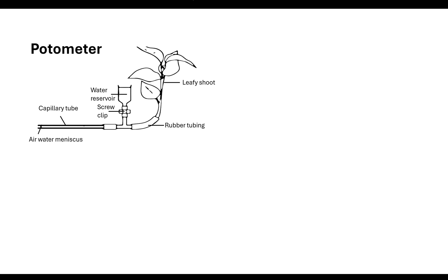To measure the rate of transpiration we use a potometer. We take a leafy shoot and insert it into a rubber bung. Importantly, we do this underwater to ensure the column of water has no air bubbles in it. We want no air bubbles anywhere within the potometer except at one place — the air-water meniscus in the capillary tube — because we measure the rate at which that meniscus moves along the tube.